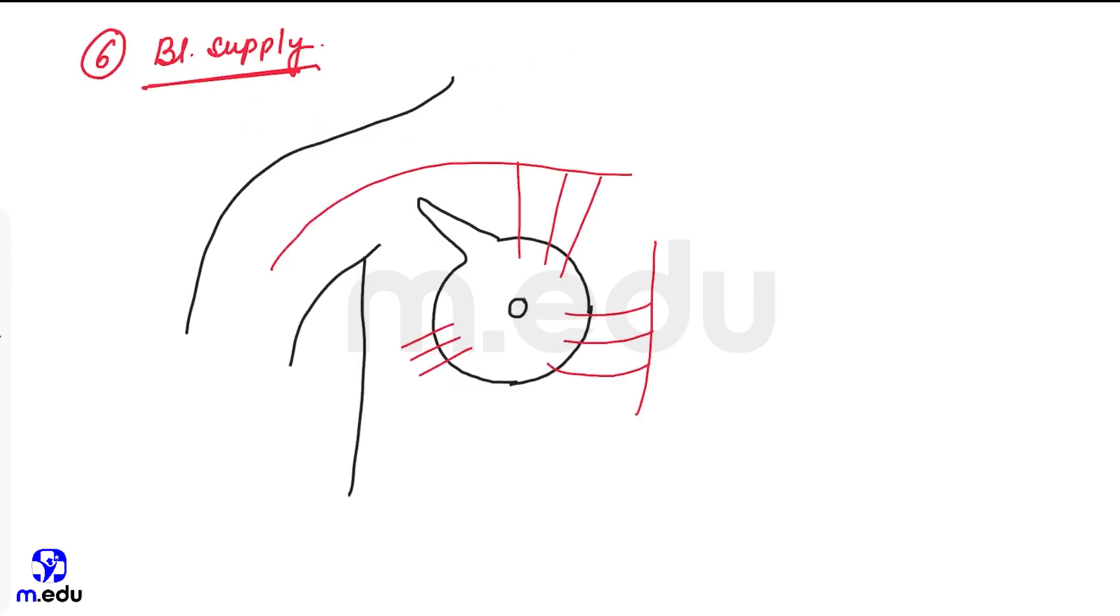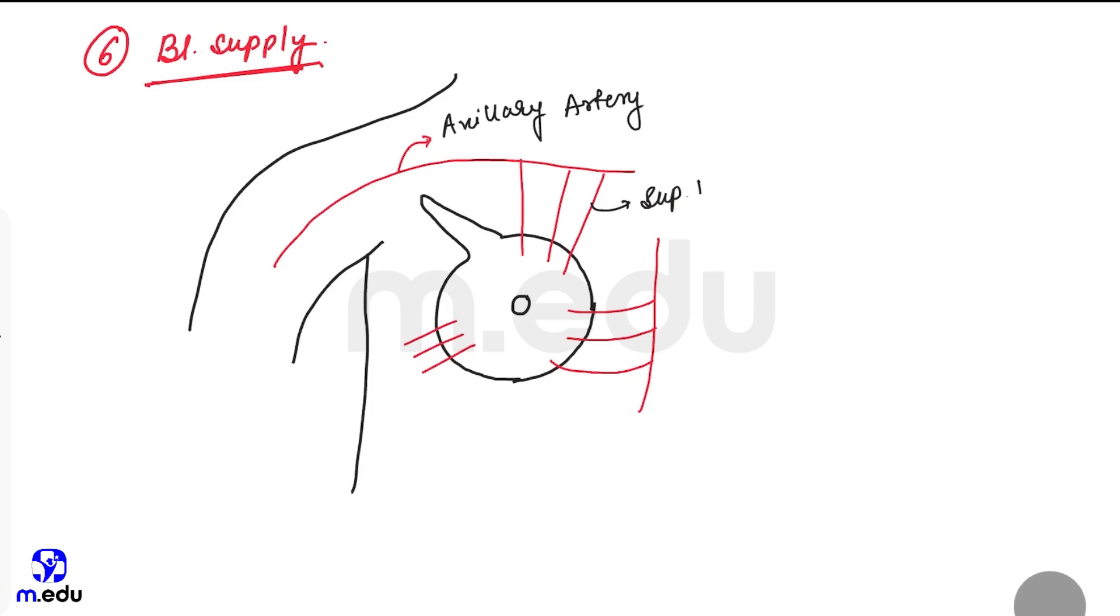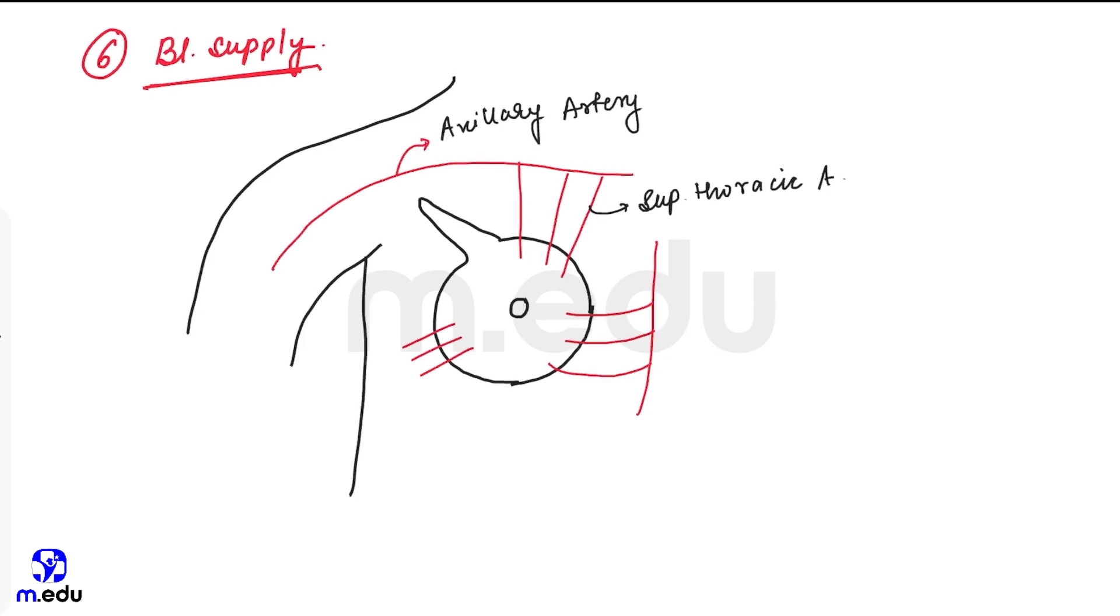Next heading: blood supply. The breast is supplied by, this is called as axillary artery. This one is superior thoracic artery, this is lateral thoracic artery.